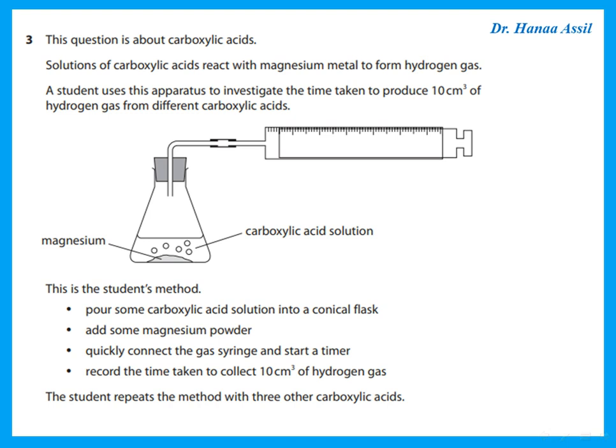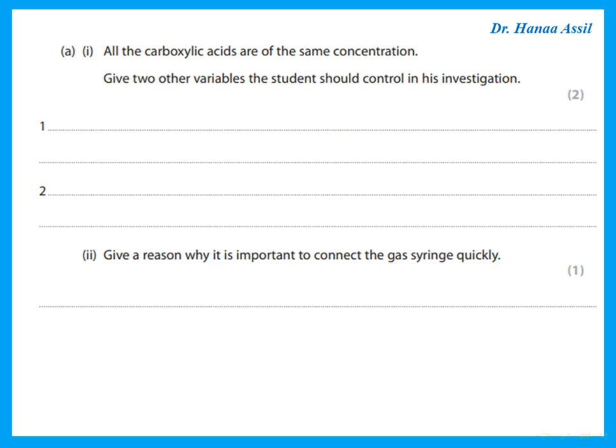This question is about carboxylic acid. Solutions of carboxylic acids react with magnesium metal to form hydrogen gas. A student uses apparatus to investigate the time taken to produce 10 cm³ of gas from different carboxylic acids. The method: pour carboxylic acid into a conical flask, add magnesium powder, quickly connect the gas syringe, start a timer, and record the time taken to collect 10 cm³ of hydrogen gas.